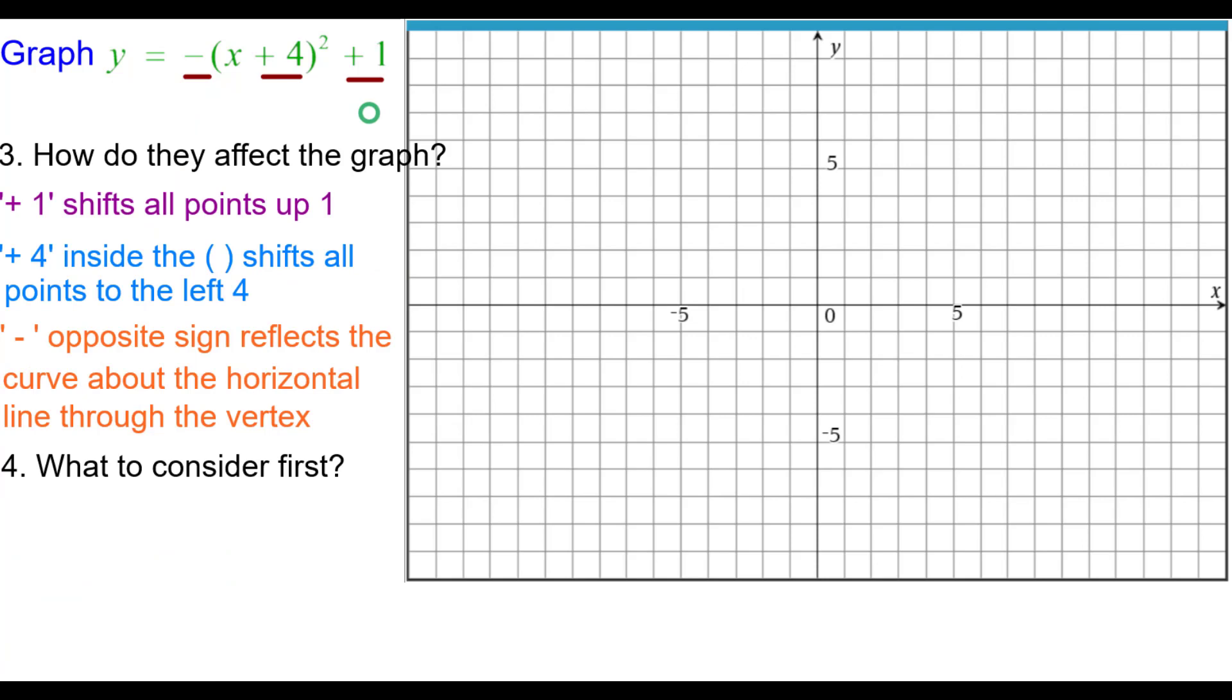What do we consider first? We suggest plotting the vertex first. And that's going to be affected by the left 4 on the x. So negative 4. And up 1 plus 1 on the y. So the point negative 4 comma 1 is our vertex.